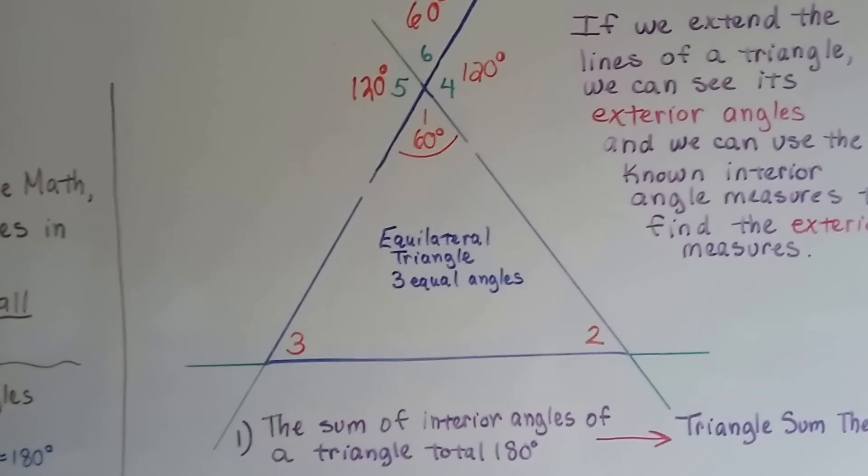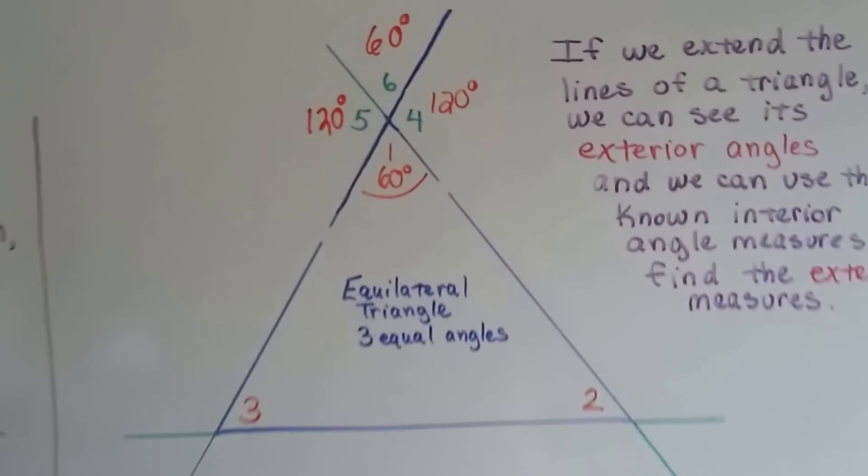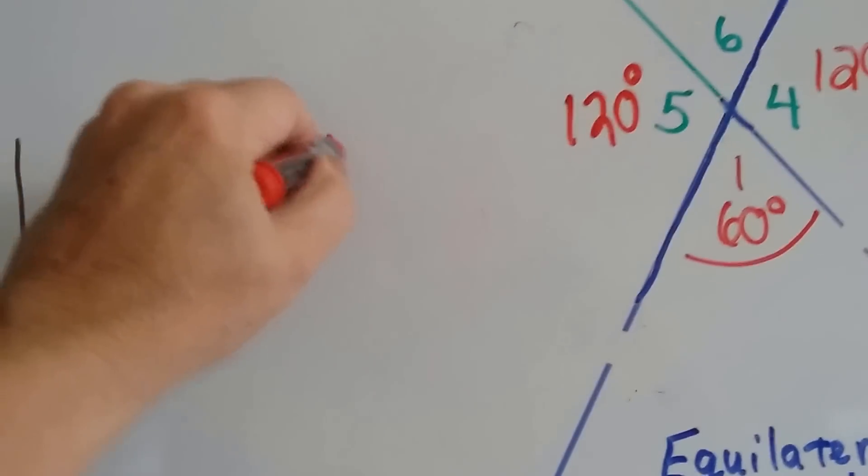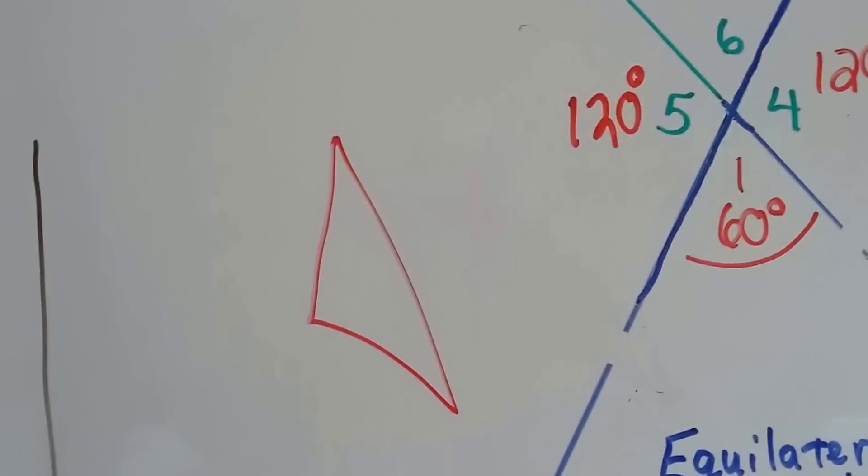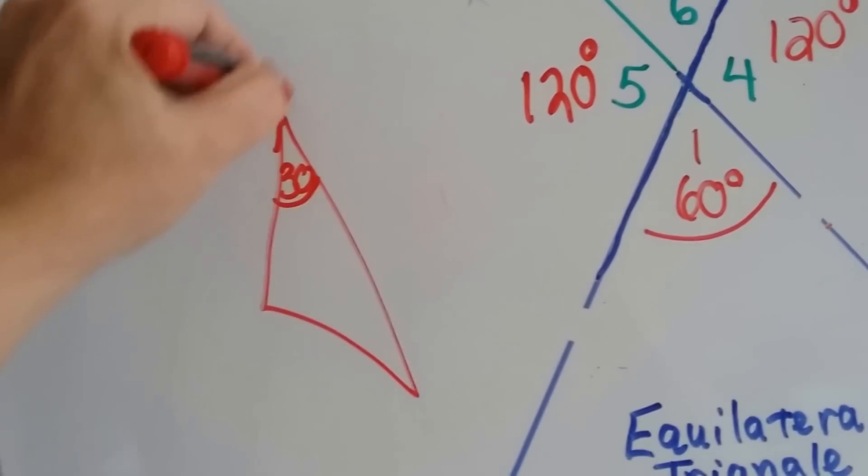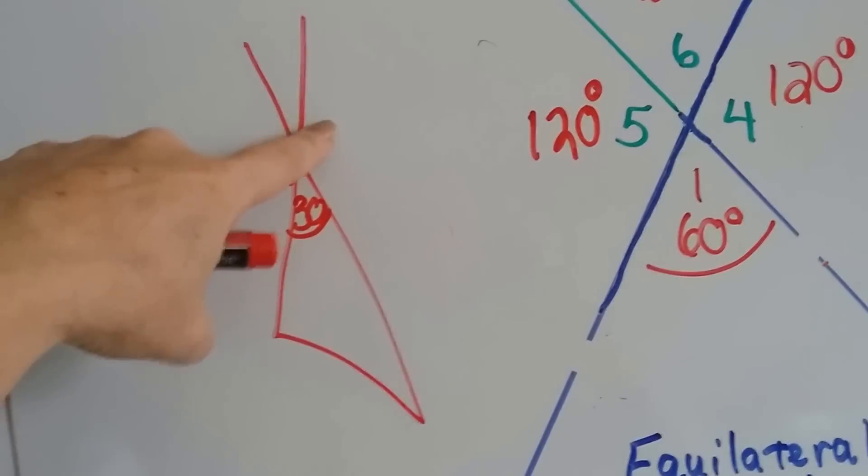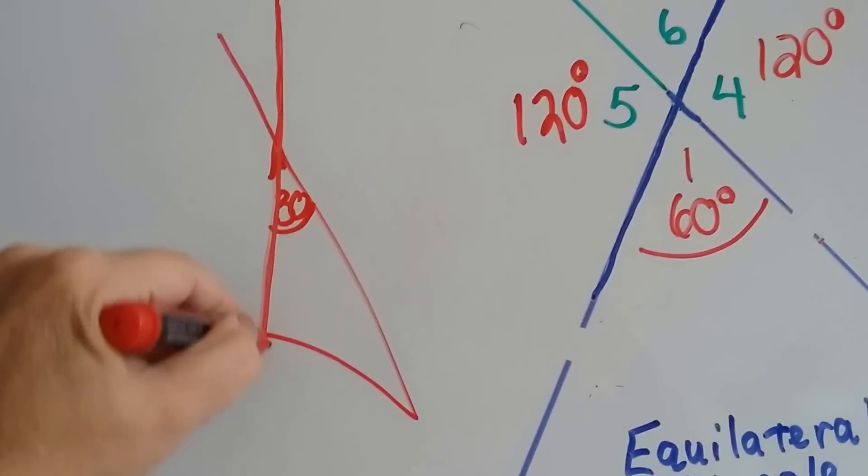Now what if it wasn't an equilateral triangle? Would it still work having this one angle measure? What if it was a weird-shaped triangle? And we knew that this was 30 degrees, and we extended the lines. Would we be able to find this measure? Yeah, because it would have to be 180 to be right here.